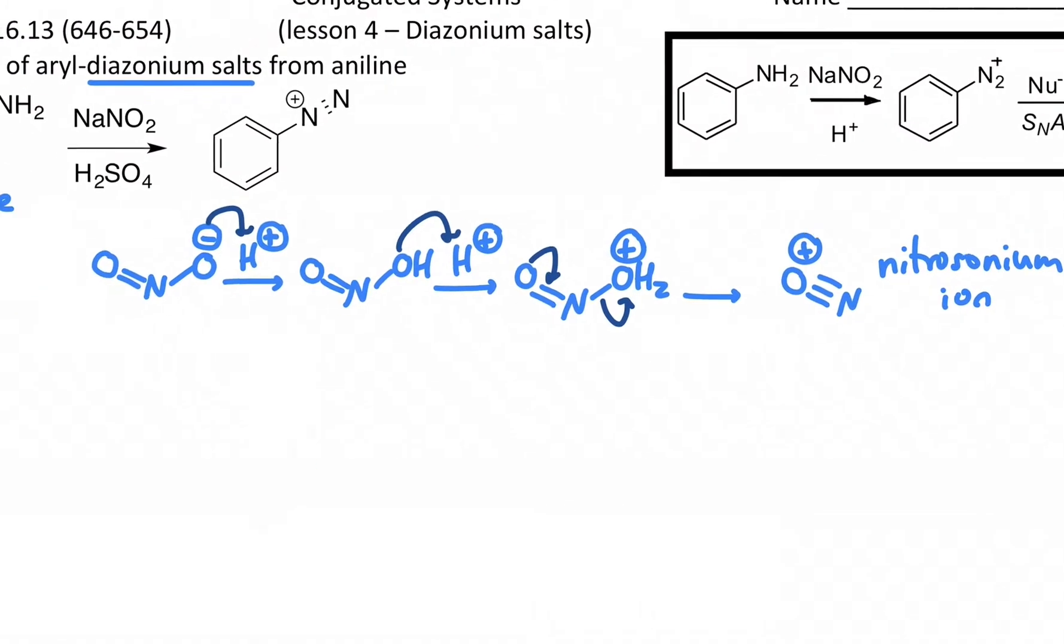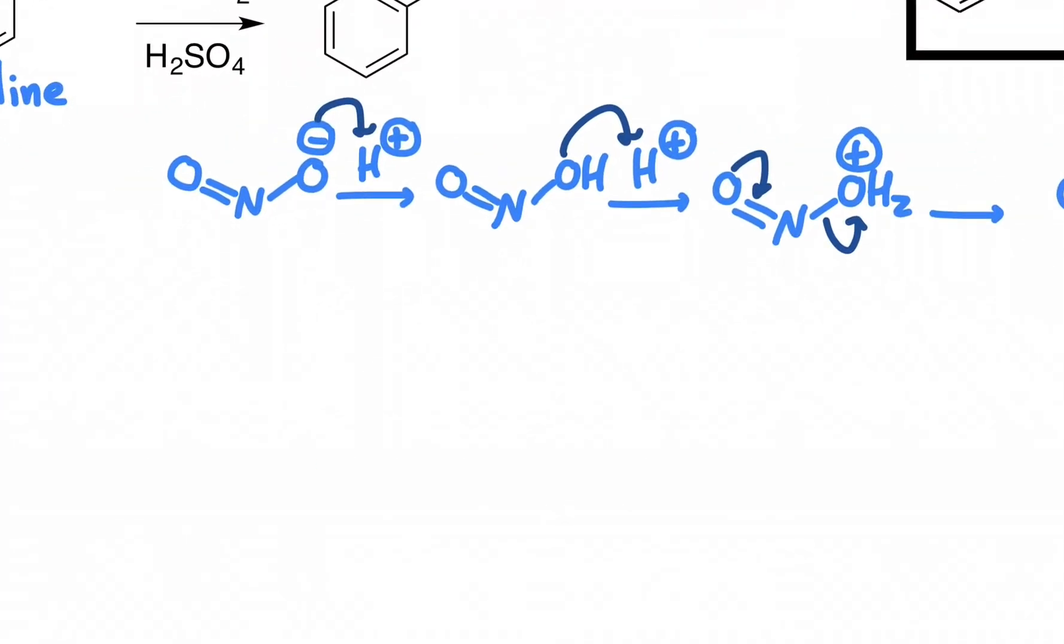And the nitrosonium ion is what's seen by a benzene, or specifically an aniline. So now we have an aniline. This actually works with a lot of different amines. We're just going to use aniline specifically. But when the aniline sees the nitrosonium, the nitrogen will attack the nitrogen.